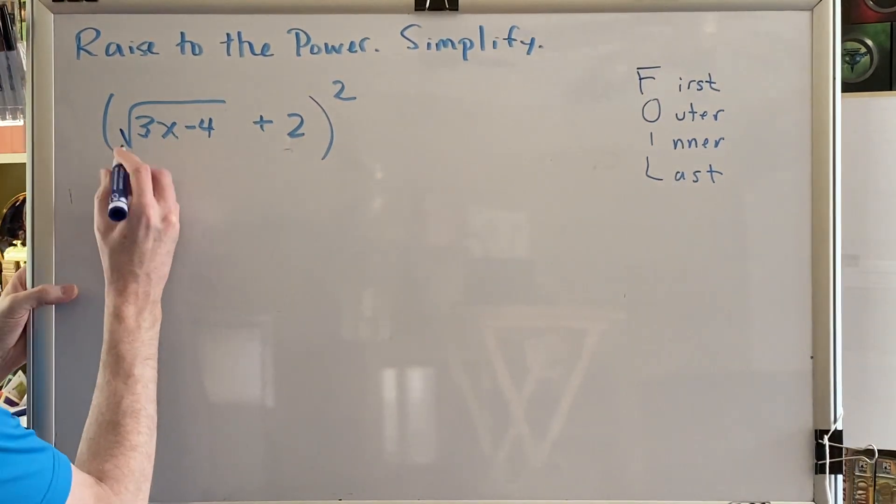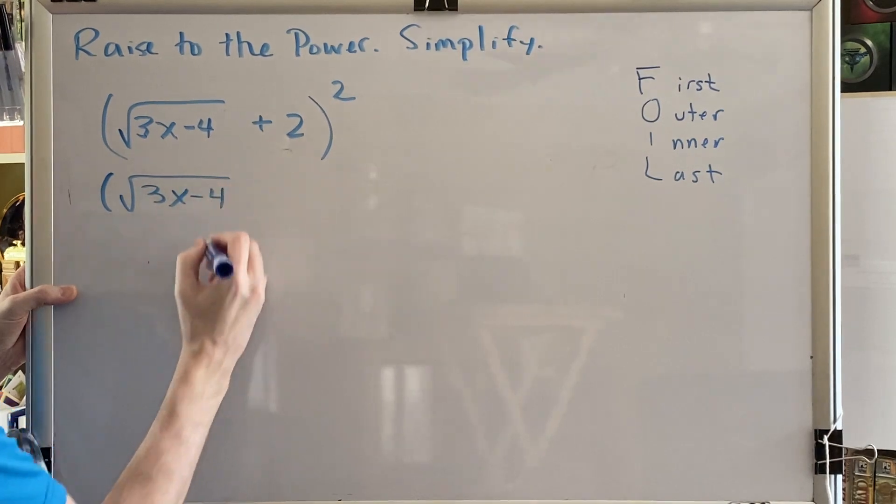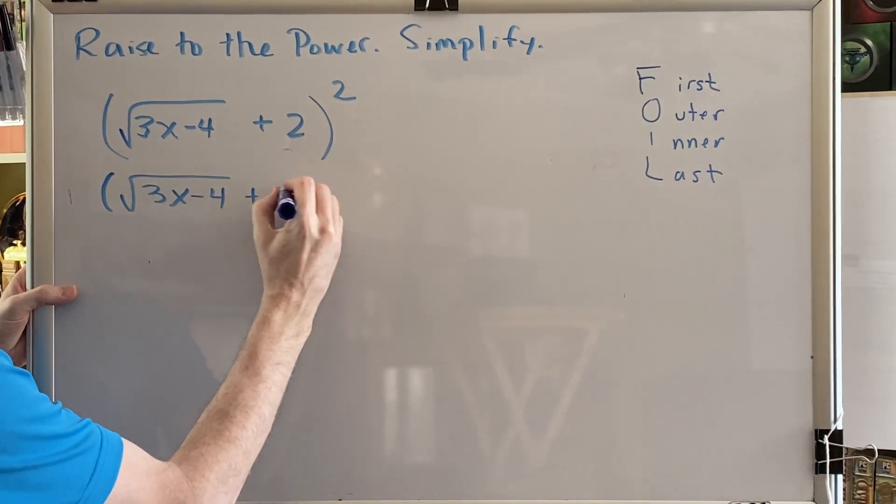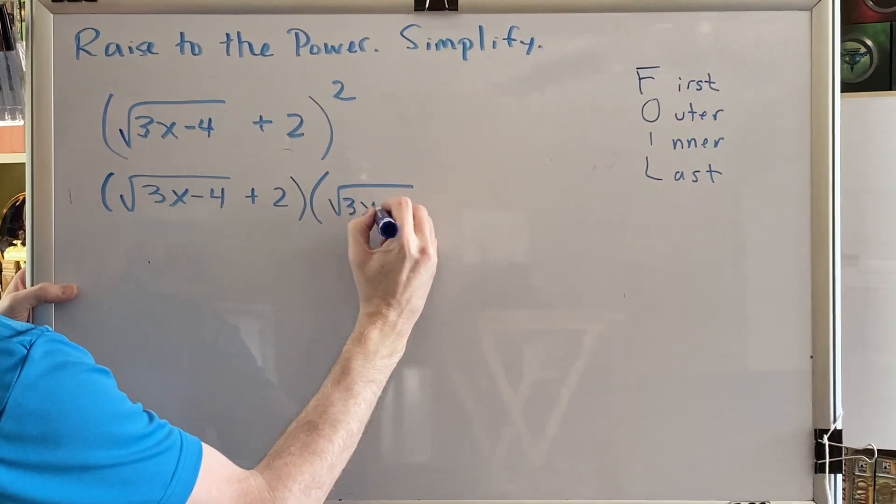Let's rewrite this as the square root of the difference 3x minus 4, plus 2, all in parentheses, times another copy of that same thing.